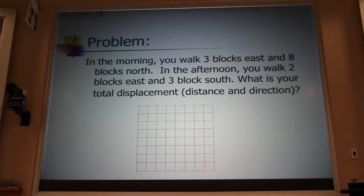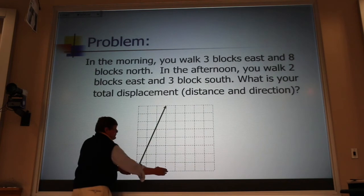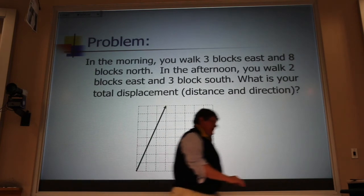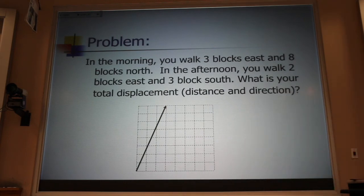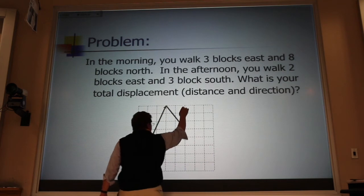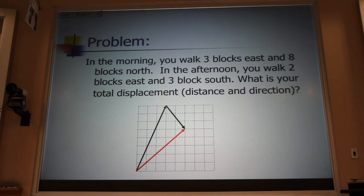If I do this on a coordinate system, my first walk, I go three blocks east and eight blocks north. For the second walk, I go two blocks east and three blocks south. What we're looking for is this red vector right there.